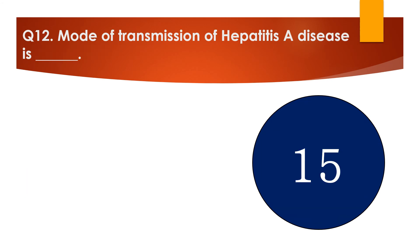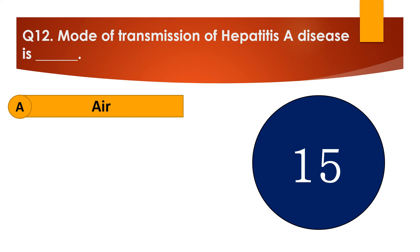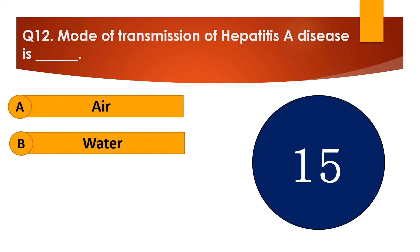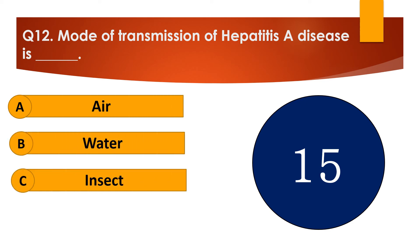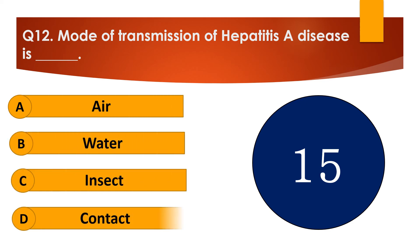Question number 12. Mode of transmission of Hepatitis A disease is dash. The options are: A. Air, B. Water, C. Insect, or D. Contact.